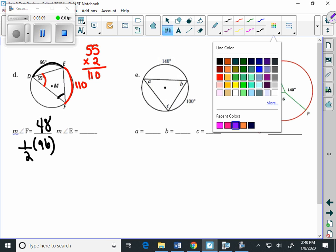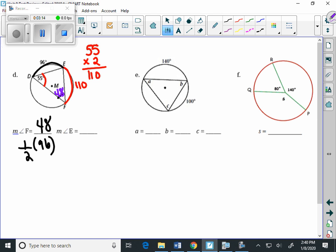What we can do for angle E is now we know that this angle is 48, and we already know the 55. So 48 plus 55 is 103.